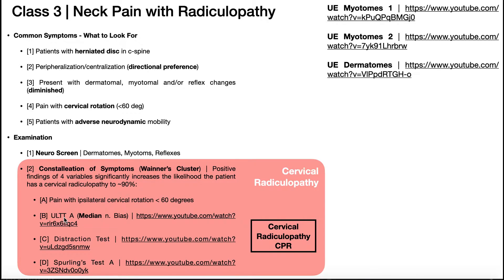The second test in Wainner's cluster is the upper limb tension test A, which has a median nerve bias. Patients with radiculopathy may also have adverse neurodynamics, so this upper limb tension test puts tension on the nerves in the upper extremity with a bias toward the median nerve. If they have a positive test for that, it rules up having a radiculopathy.